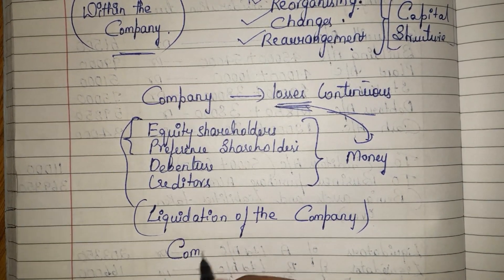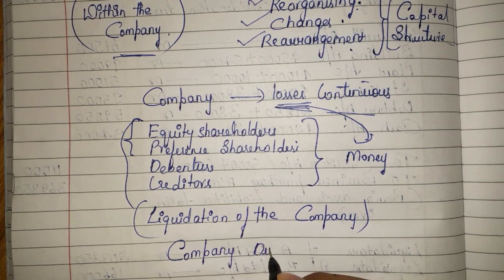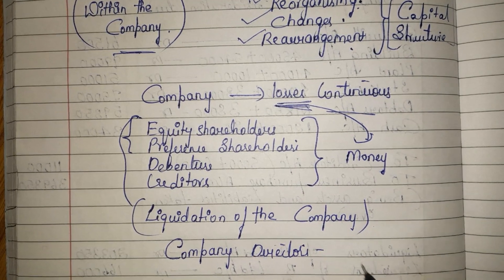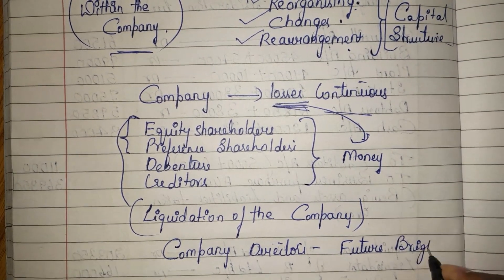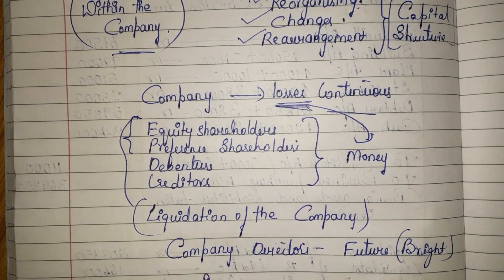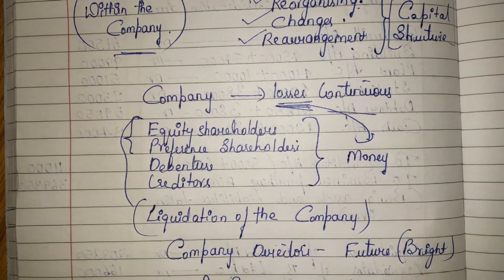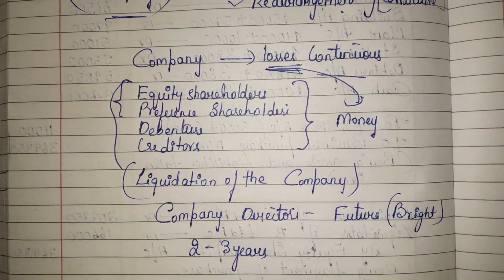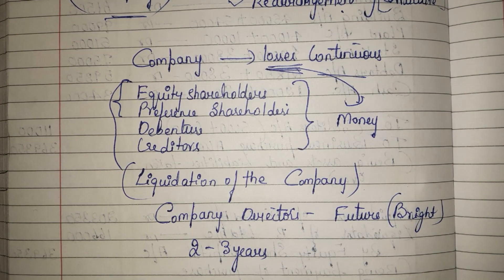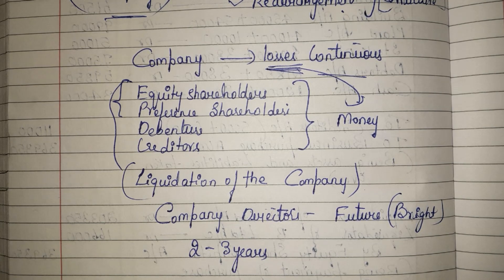The company directors will say no, don't do like that, because the company is having a bright future ahead. When all the stakeholders are demanding their money and threatening liquidation, the directors will give up an idea. The directors and shareholders and debenture holders sit together and plan for the rearrangement of the capital structure.